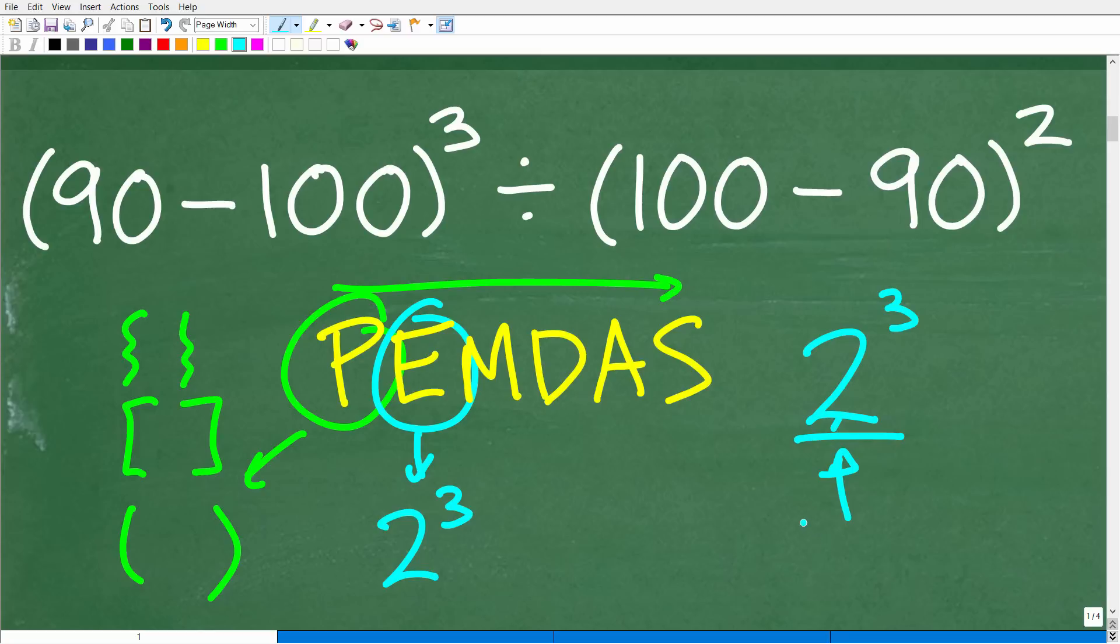The 2 part of this power is called the base. This little 3 up here is called the exponent. So when you're dealing with a power, the little number in the top right is called the exponent. So we're going to do the parentheses first, then if we have any powers, we're going to do those next.